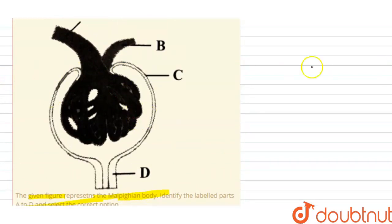Now what do you mean by the Malpighian tubule? It is the renal tubule, and this renal tubule consists of the Bowman's capsule. What is the function of the Bowman's capsule?